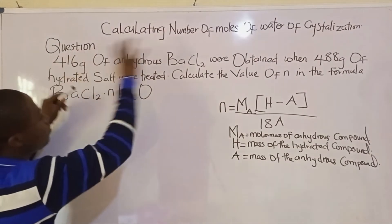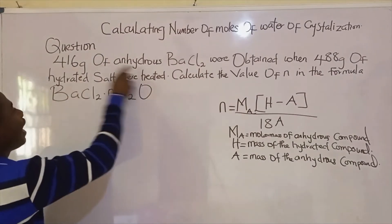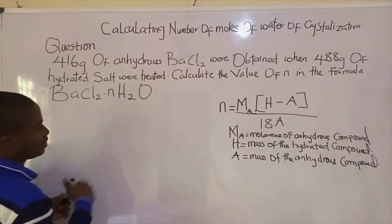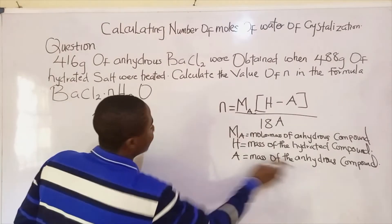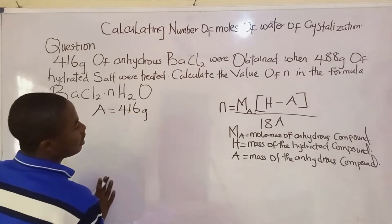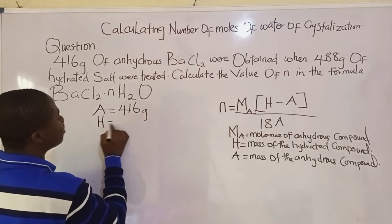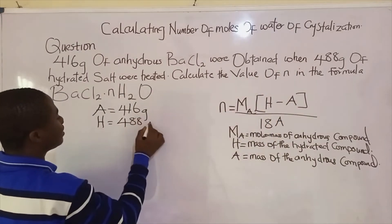So we simply bring out the parameters. What is the mass of the anhydrous salt? 416. So A, which is mass of anhydrous salt, becomes 416 grams, and H, which is the mass of the hydrated salt, becomes 488 grams.